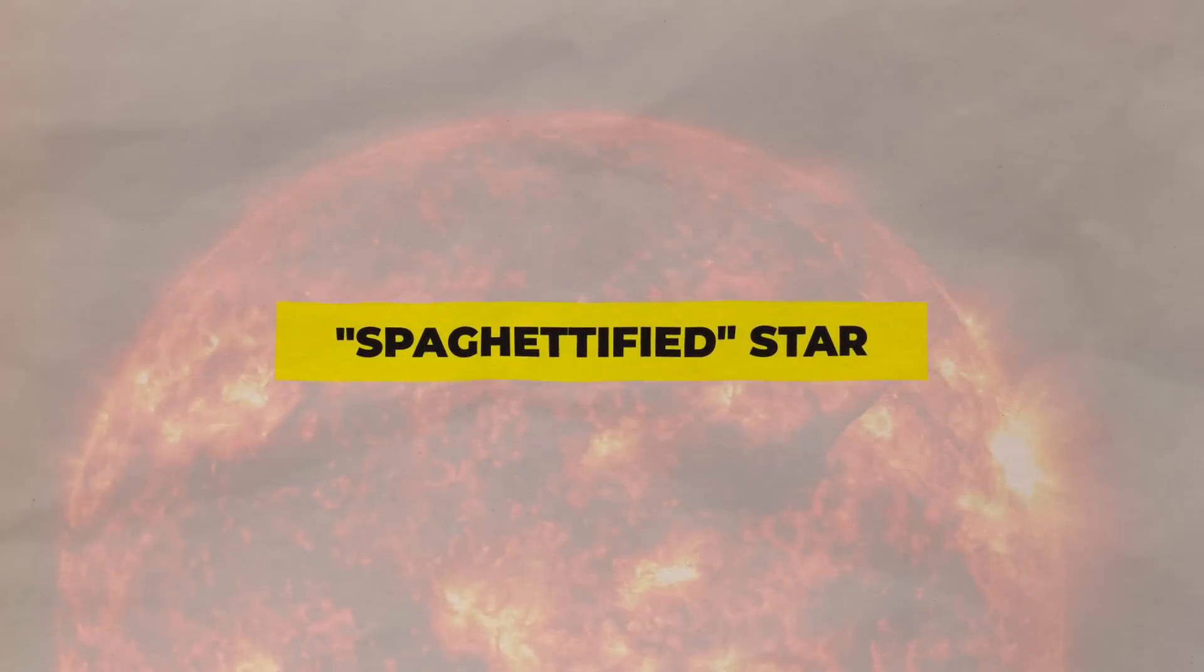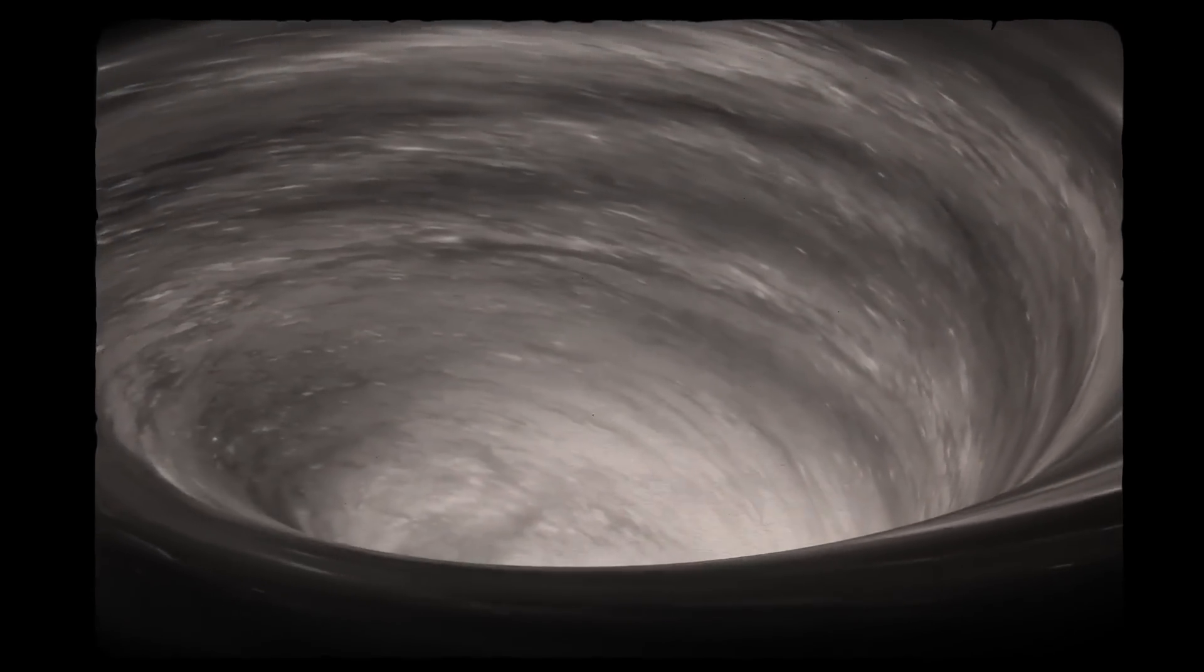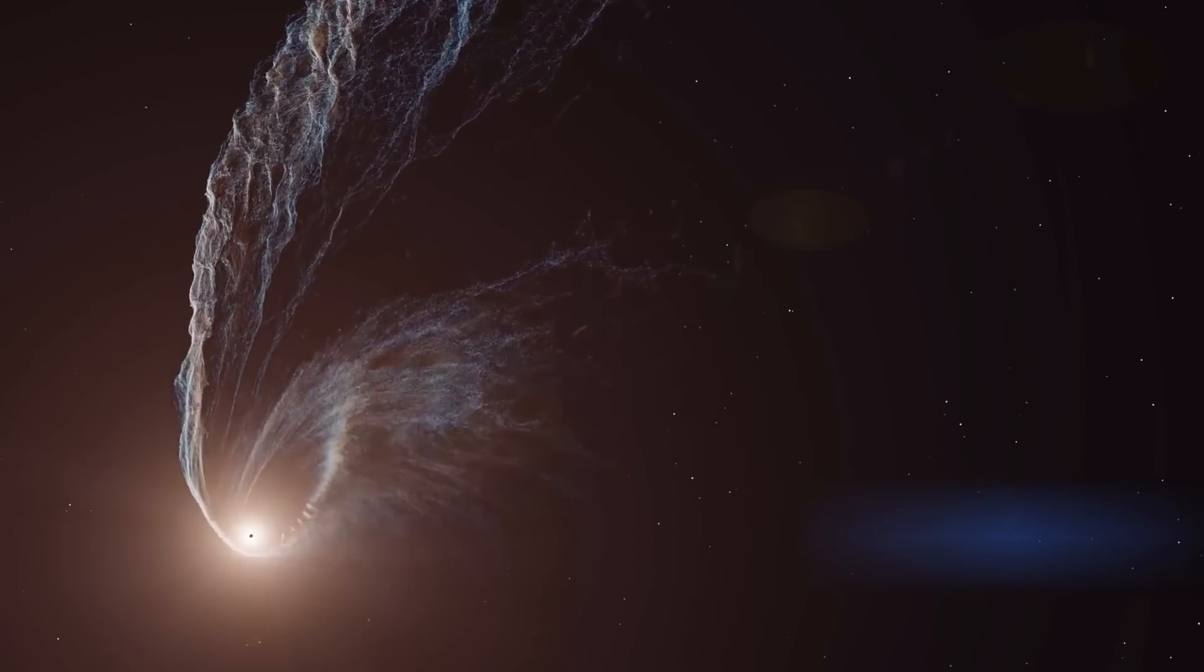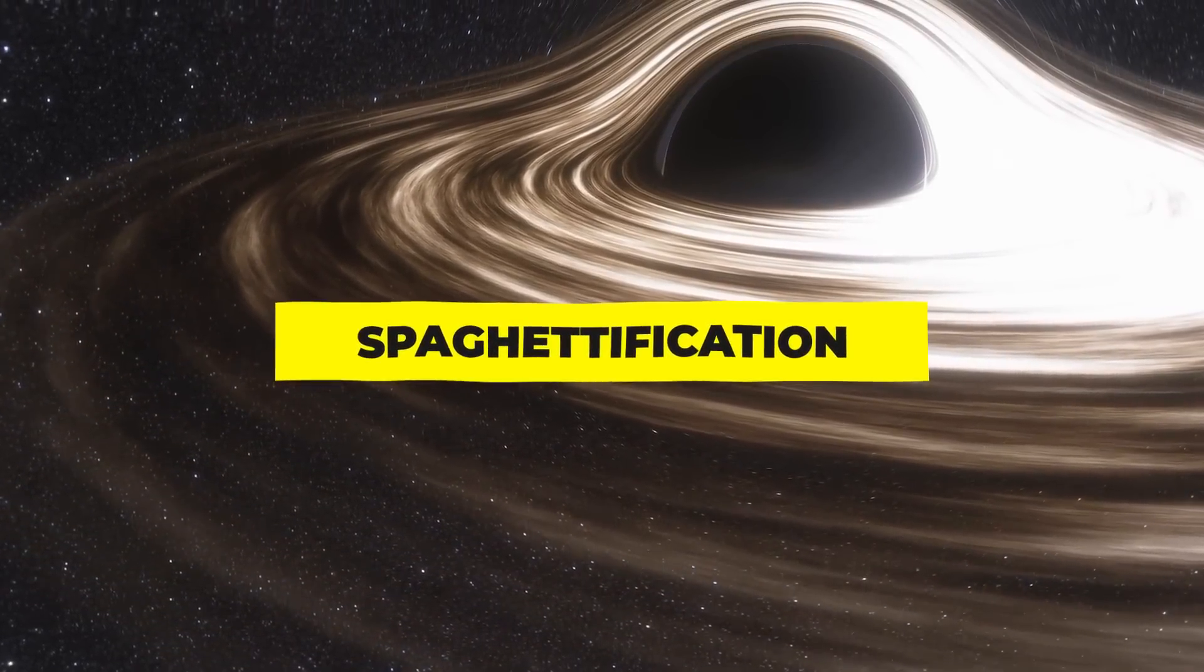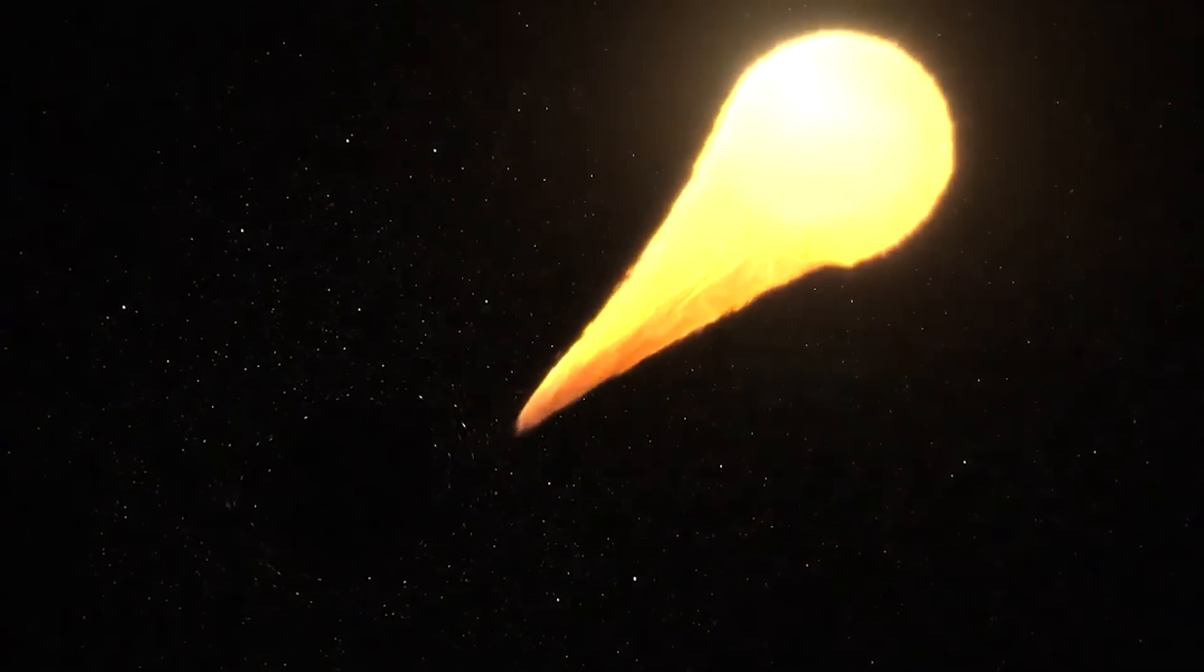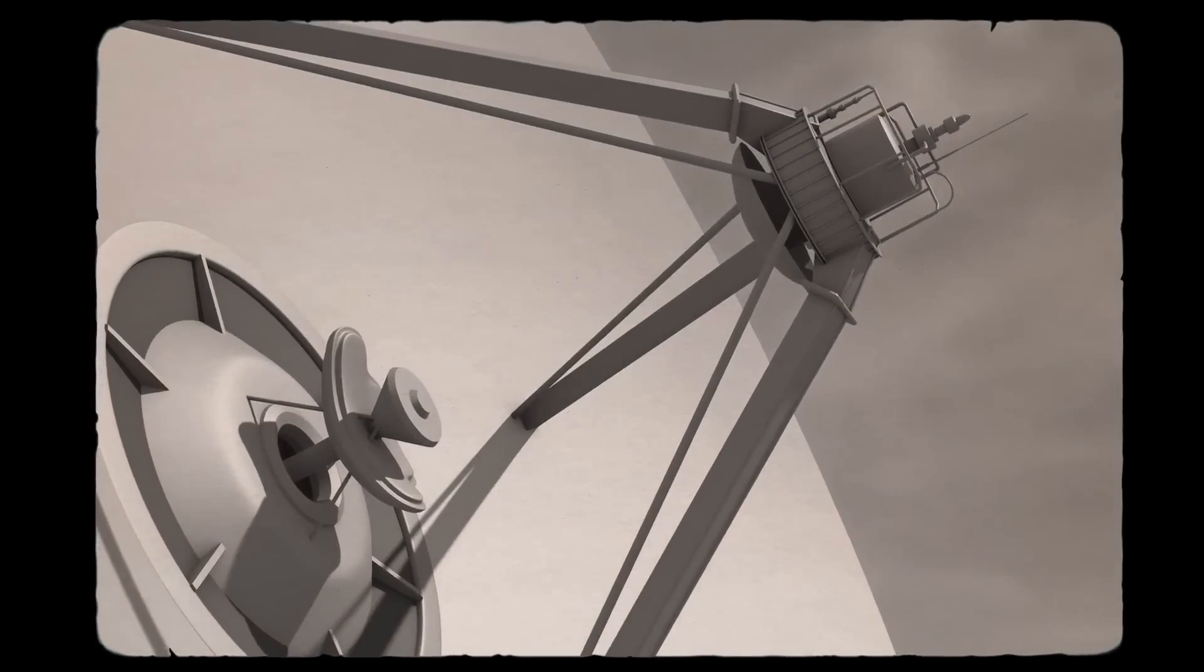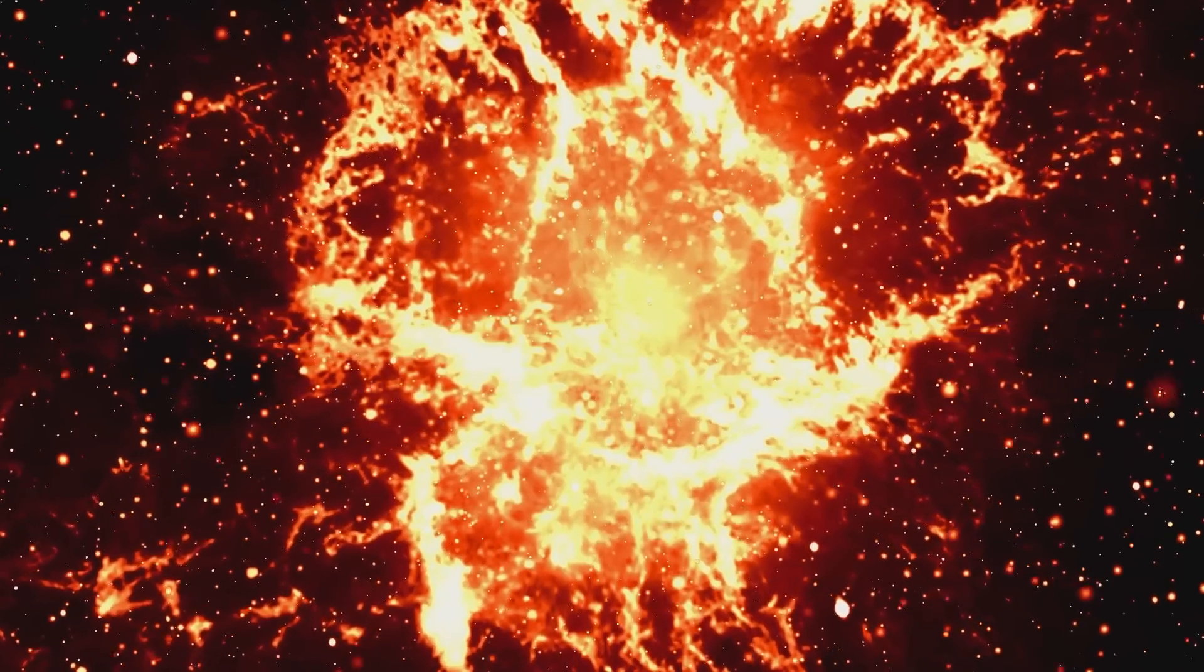Number 4: The first view of a spaghettified star. Black holes consume messily. The unfortunate star is stretched into the shape of a long noodle by the black hole's intense gravity when it comes too close to one of these hungry objects, a process known as spaghettification. When a black hole 750 million light-years from Earth that has 30 million times the mass of the Sun engulfed a passing star, researchers witnessed this messy process for the first time last year. Telescopes on Earth were able to plainly see a dazzling flash of optical light, x-rays, and radio waves that were produced by the disastrous impact.